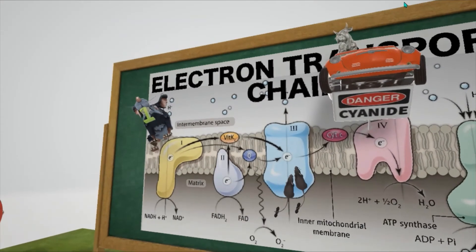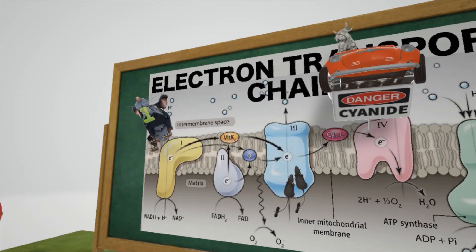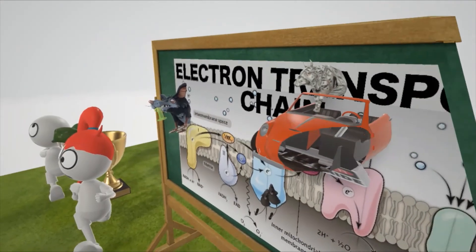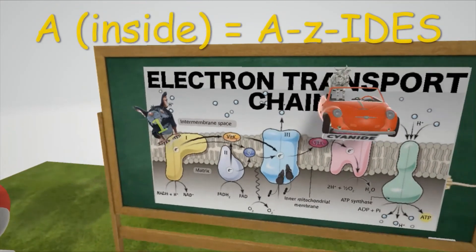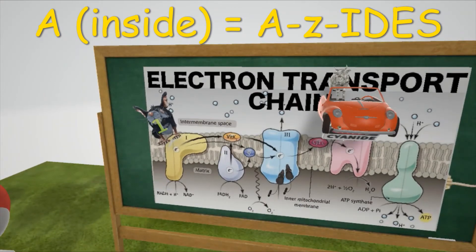In complex 4 we see a sign. A sign that says cyanide to help us remember cyanide. Cyanide inhibits complex 4. Here we see an ox made of money on a car. The car money ox for carbon monoxide. And he's going through the A over here to help us remember the azides.